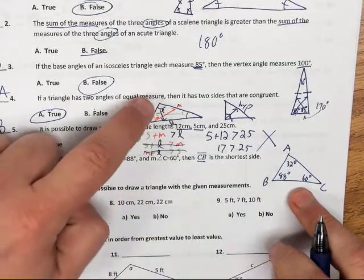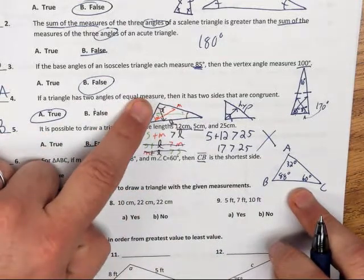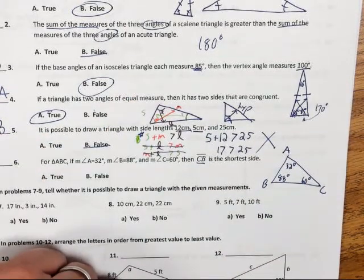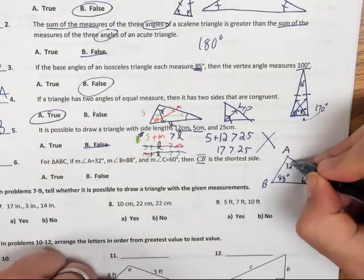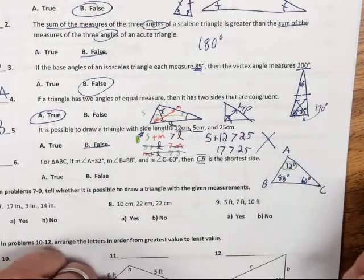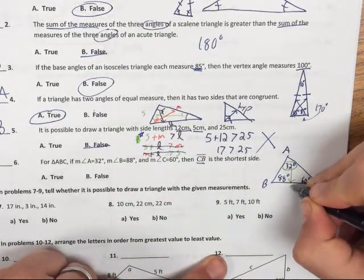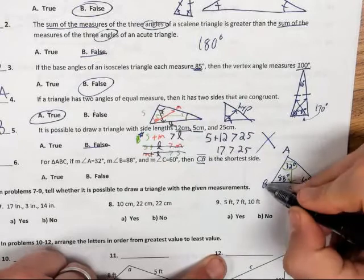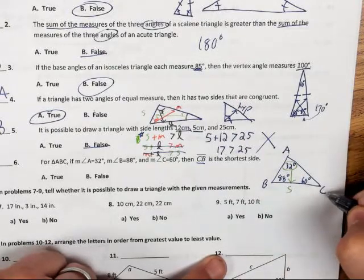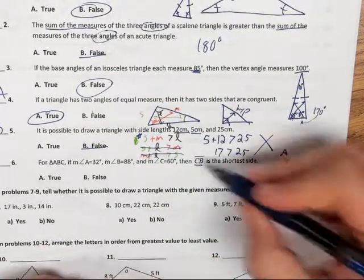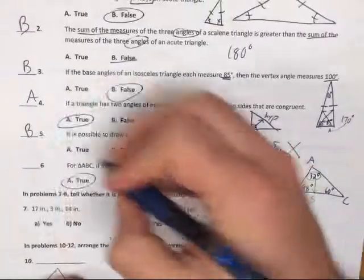Now, based on these relationships we talked about earlier on number four, it looks like my small angle is going to be A, which is 32 degrees. Directly across from that has got to be my shortest side, which is BC or also segment CB. So yes, CB is the shortest side. That is true.